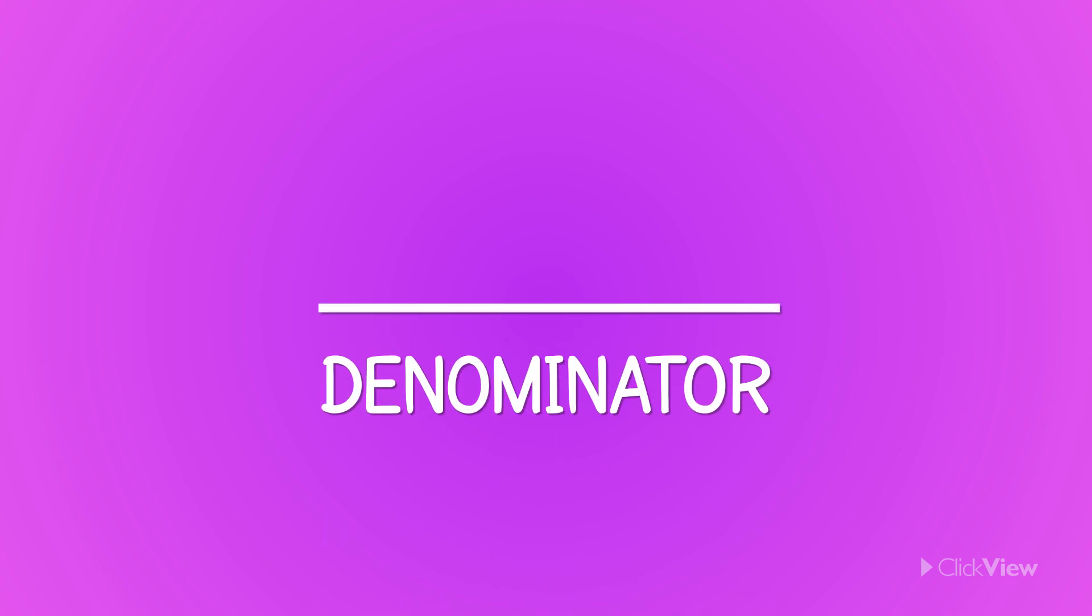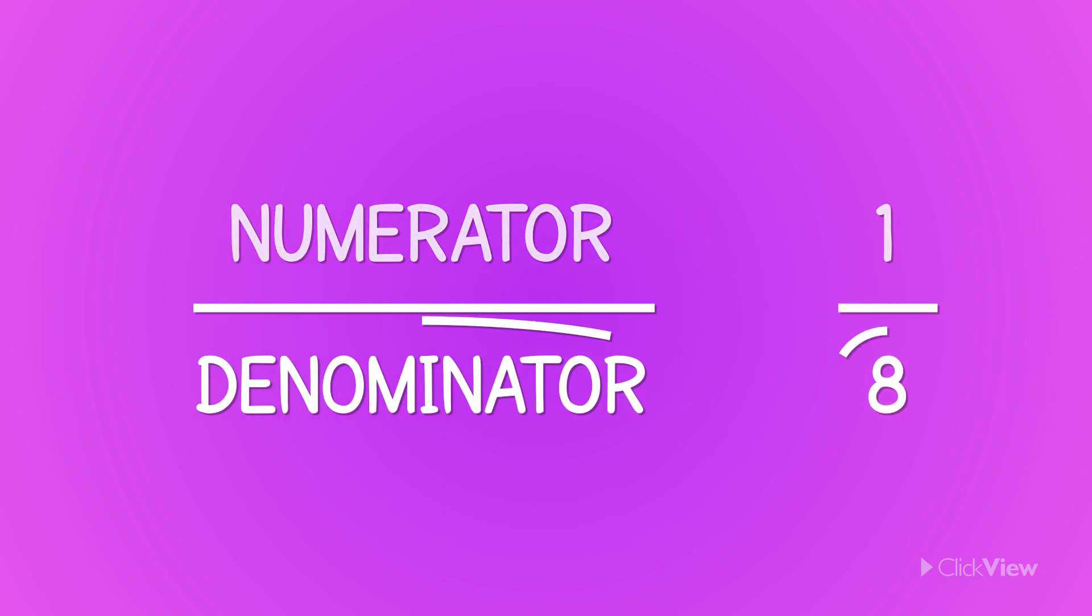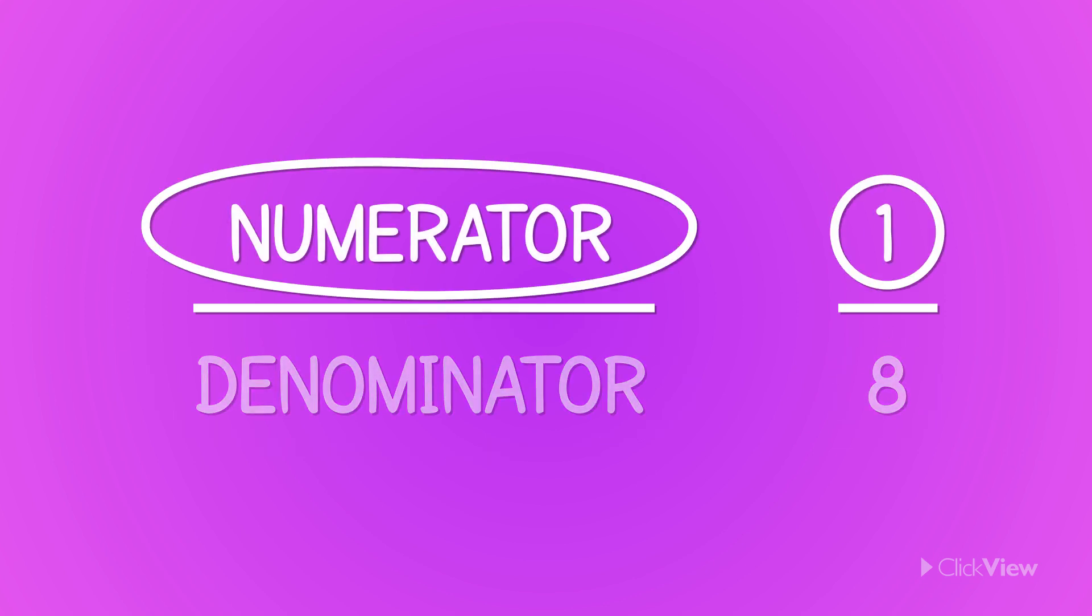A fraction has two parts: a denominator and a numerator. The denominator is the bottom number in a fraction. It represents the total number of equal parts that the item has been divided into. The numerator is the top number in a fraction. It represents the number of equal parts of the item that you have.